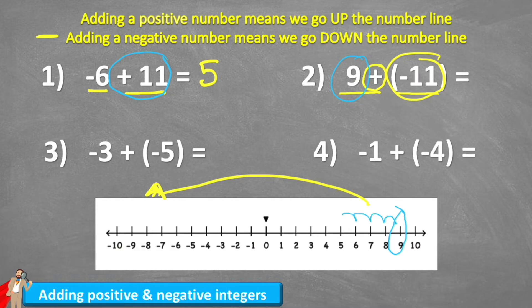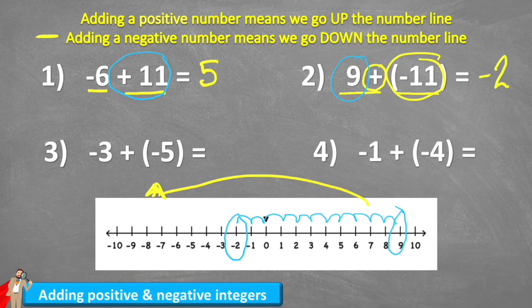One, two, three, four, five, six, seven, eight, nine, ten, eleven — and I land on negative two. Therefore, nine plus a negative 11 leaves us with negative two.